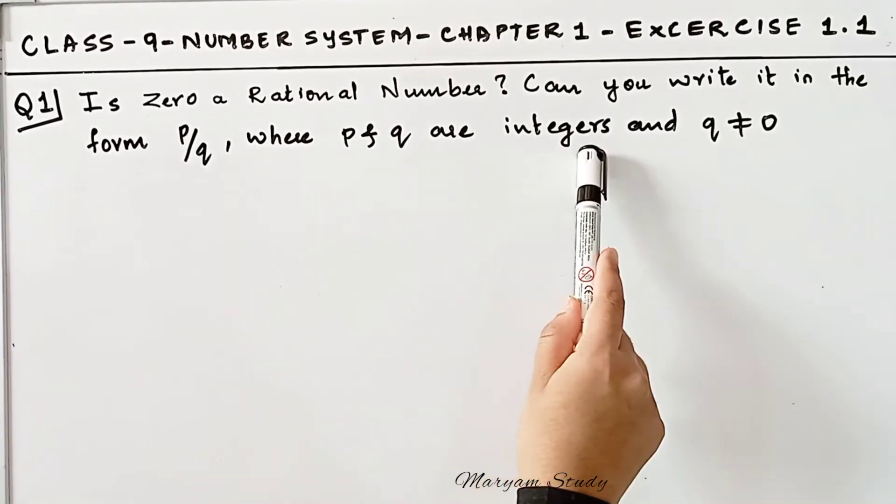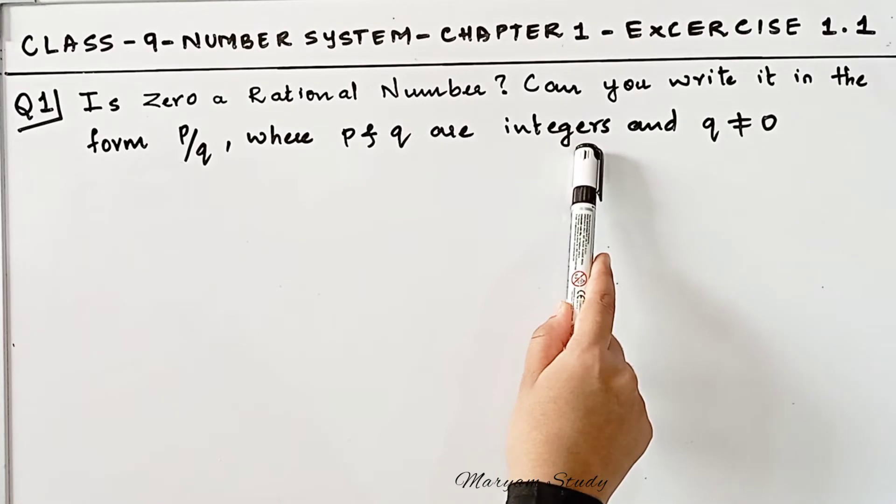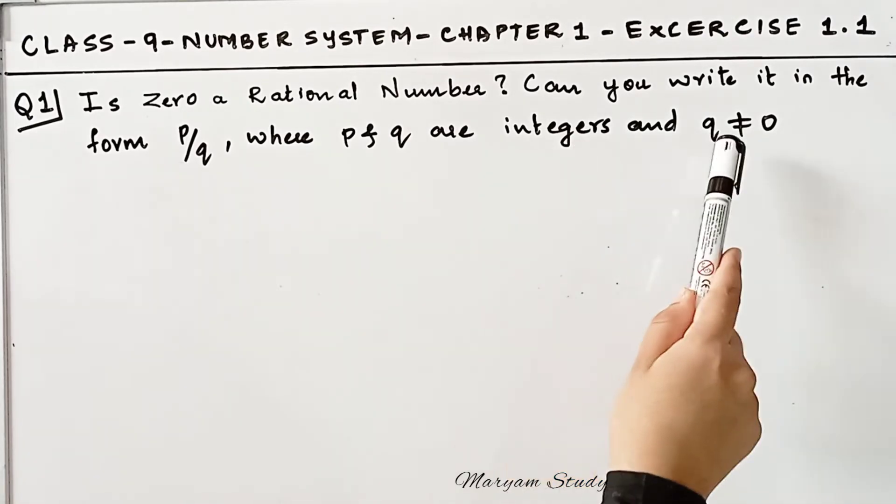So P by Q will be integers. Integers in the sense that it can be 0, 1, 2, minus 1, minus 2. Why can't it be 0?